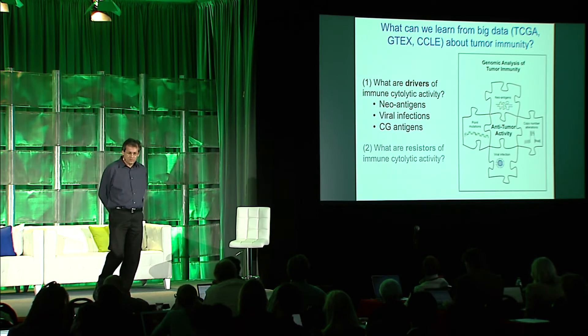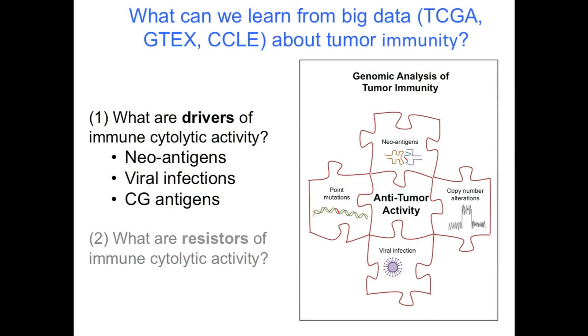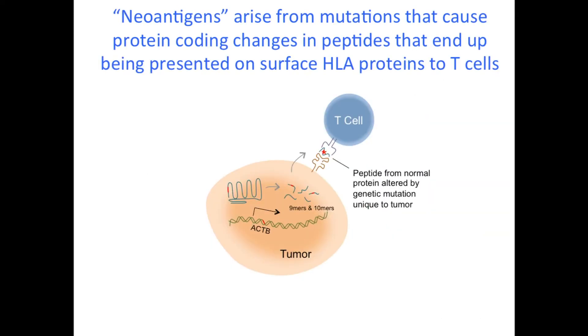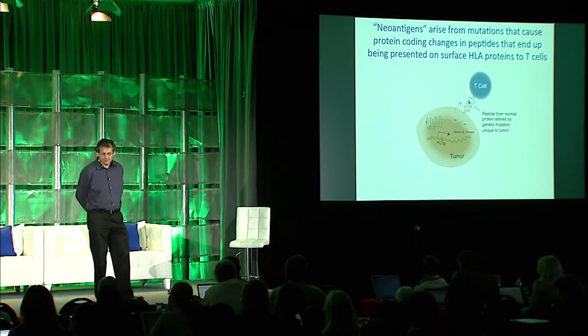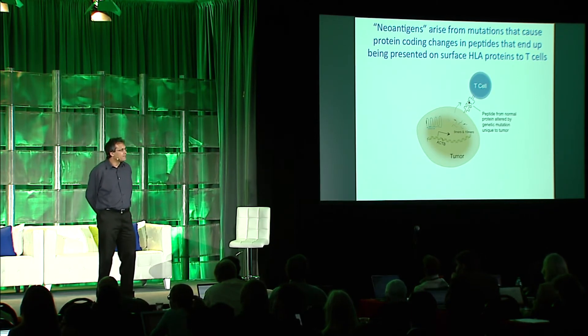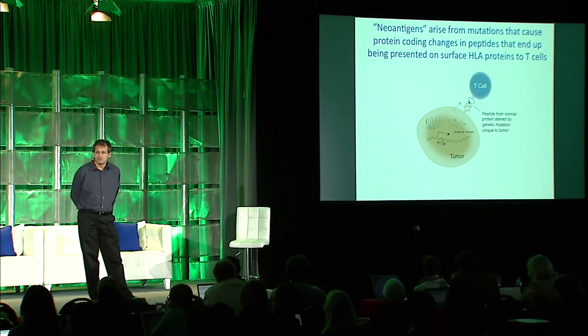The first question we wanted to ask is what are the drivers of immune cytolytic activity. We considered three potential drivers: neoantigens, viral antigens, and cancer-germline antigens — different targets in the tumors that may drive the T-cell response. The way it works is that proteins made in the tumor cell are processed into small peptides, which are then presented on the surface of the cell, and the T-cell may recognize it if it has the right sequence on the T-cell receptor. We wanted to know whether neoantigens — mutated antigens with mutations compared to normal wild-type peptides — might be the source of stimulation for immune responses.